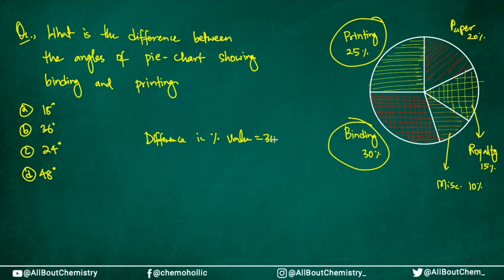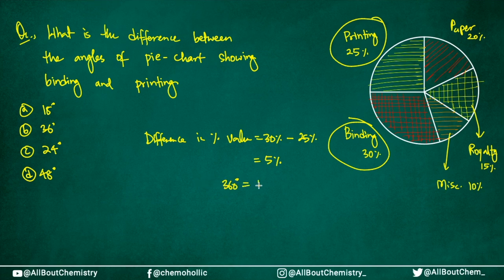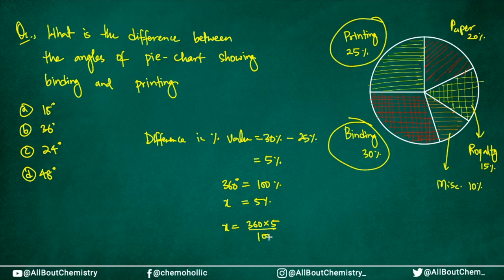Binding is 30% and printing is 25%, so the difference is 5%. Now, how many degrees does 5% represent? You know that 360 degrees represents 100%, so 5% will be represented by x degrees. Cross multiply: x equals 360 times 5 divided by 100, giving 18 degrees. That's option A.